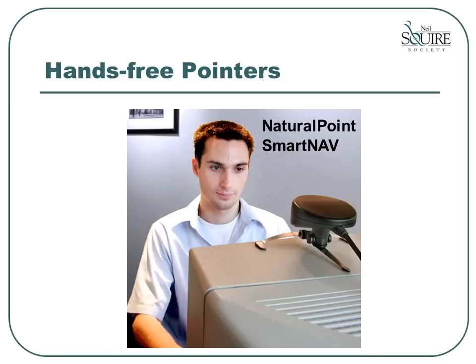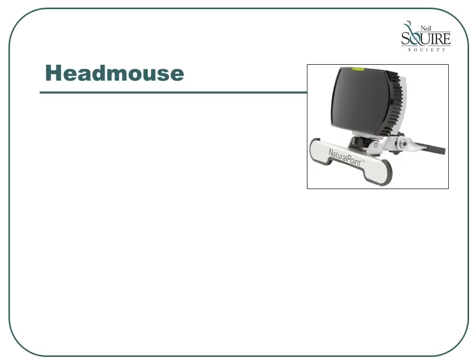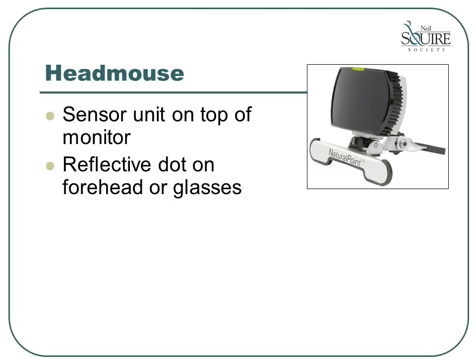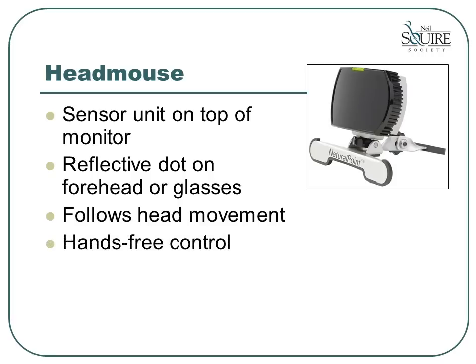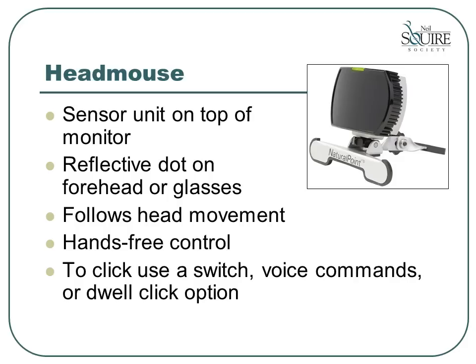The next category of mice are hands-free pointers. The head mouse is the most popular of the hands-free devices for mouse control. With a head mouse, there is a small unit which sits on top of your computer monitor — it looks very much like a webcam. You place a small silver dot of reflective material on your forehead or on your glasses. When the unit is active, it will sense the position of the reflective dot, and you will be able to control the mouse movement by moving your head. To click, you can use either a separate plugged-in switch, voice commands, or the dwell click option. To use a head mouse successfully, you need very good head control and a lot of patience. It is usually recommended only for those who have no other alternatives — for example, high-level quadriplegics.